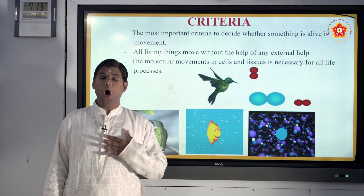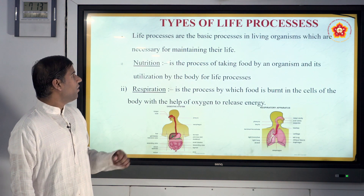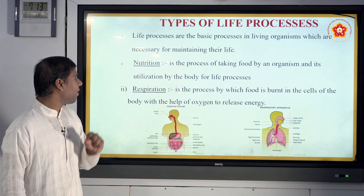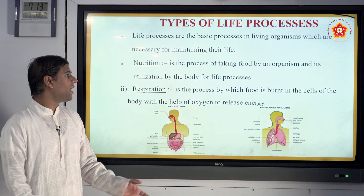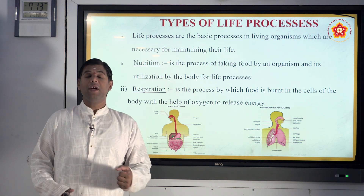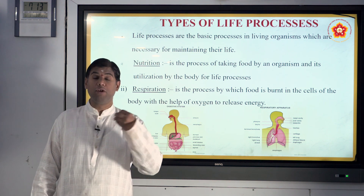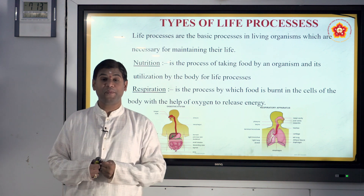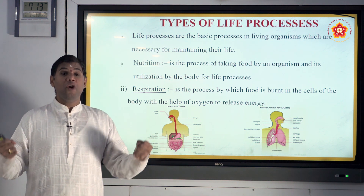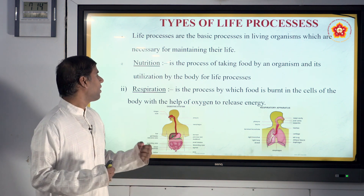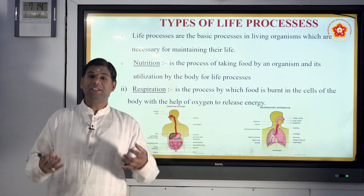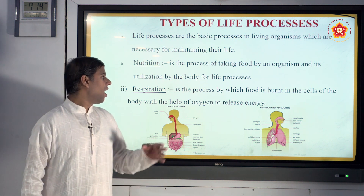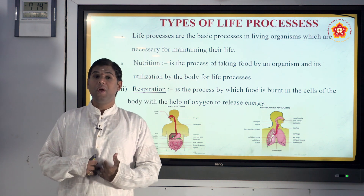Let's see the types of life processes. First is nutrition — the process of taking food by an organism and utilizing it for body processes. For example, you take chapati, fruits, rice, sambar — all of that is a type of nutrition. The organism takes in food, it is utilized completely by the body, and then it is given out.